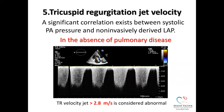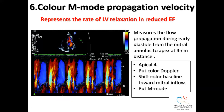The fifth method is the tricuspid regurgitation (TR) jet velocity. A significant correlation exists between systolic pulmonary artery pressure and non-invasively derived left atrial pressure. In the absence of pulmonary disease, a TR velocity more than 2.8 m/s is considered abnormal.